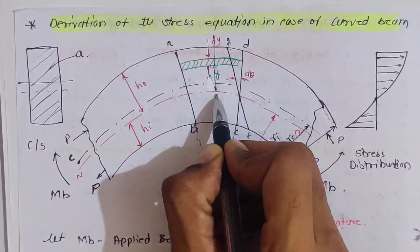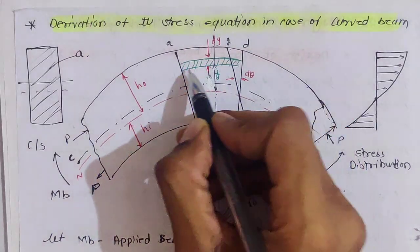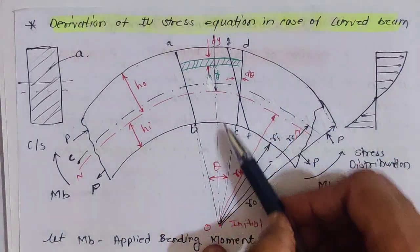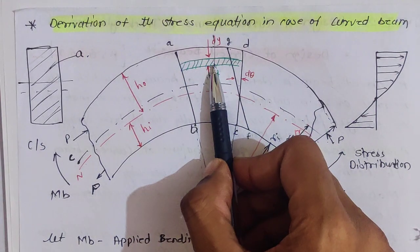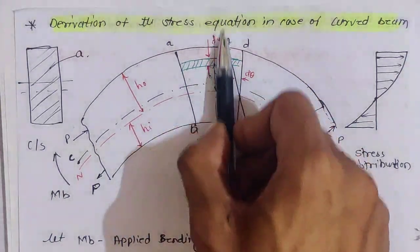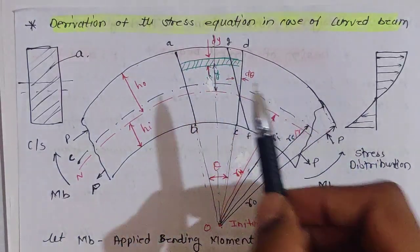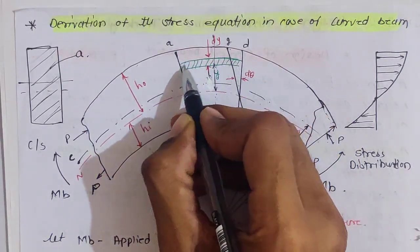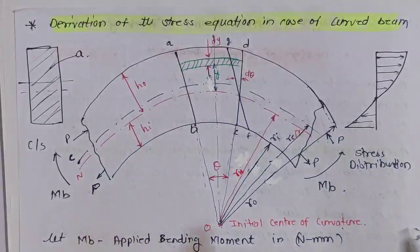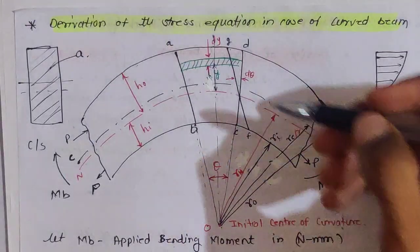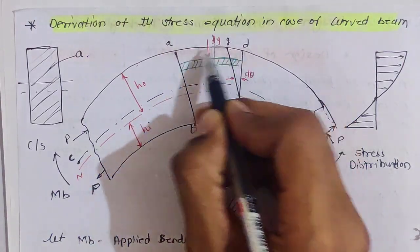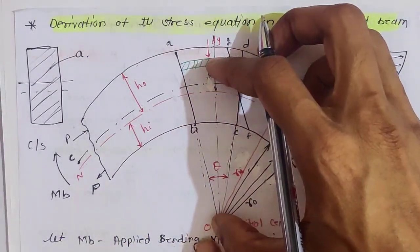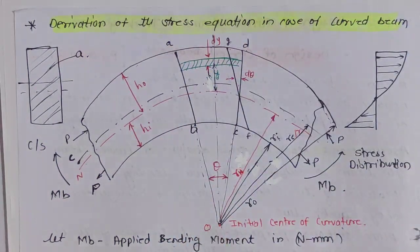Now consider a fiber of thickness dy, which is at a distance of y from the neutral axis and at a distance of y plus RN from the initial center of curvature. This whole beam has area A, so this fiber has area δA. The original length of this fiber dy: we know that arc length equals theta times radius, so the length of this fiber is theta times (RN + y).